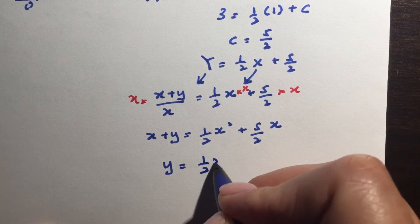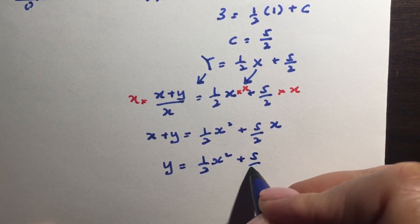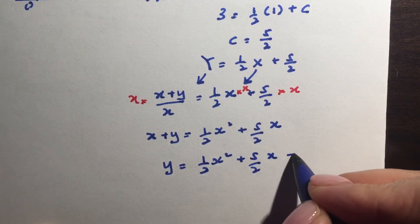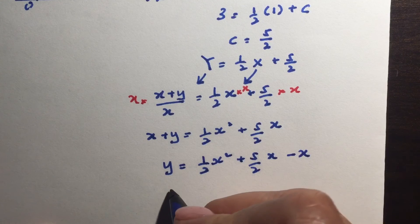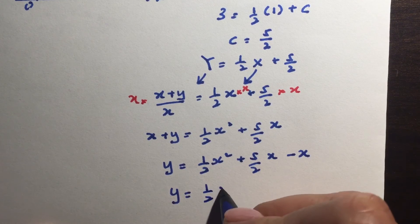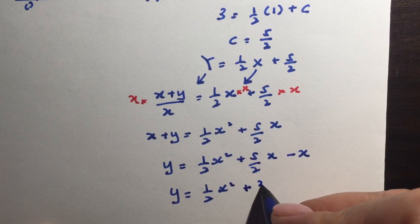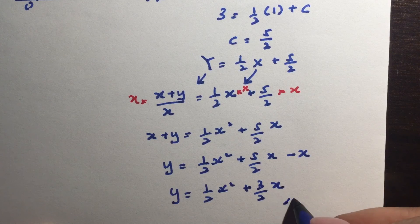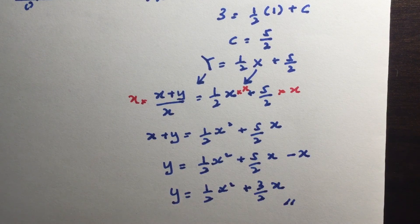So I have y equals half x squared plus 5 over 2 x minus x. So y equals half x squared plus 3 over 2 x and I'm done, I've made y the subject.